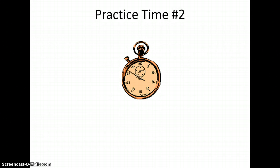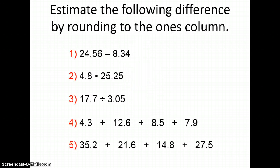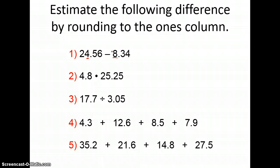Now it's practice time number two. Go ahead in the work section of your notes and estimate the following differences, products, quotients, or sums by rounding to the ones column. The ones column is the very first whole number you have for each of these. Round to the ones column, then estimate your answer. We are done with this lesson, so pause the video and complete problems one through five. You can go back and watch any portion of this video as many times as you need to.